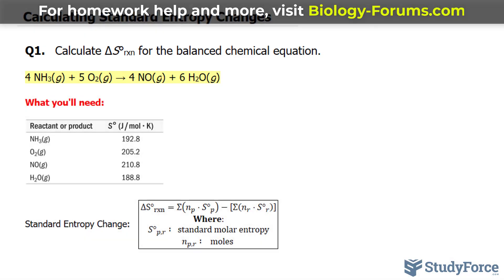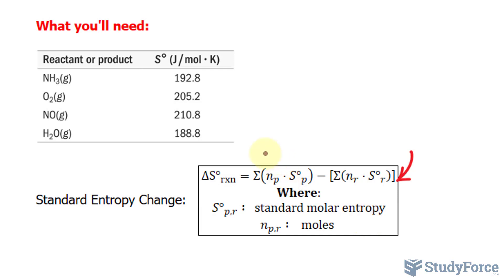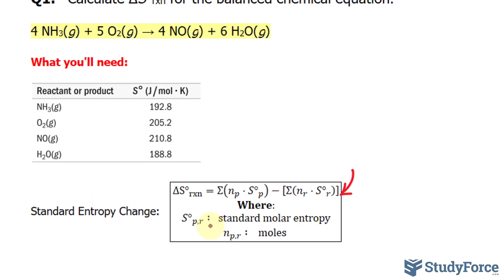So we have to find the standard entropy change, and we use the following formula shown underneath here. Let's analyze this. As you can see, we are taking the sum of the moles for each of the molecules that are produced, the products, and we subtract it by the sum of the standard molar entropies of the molecules found in the reactants.